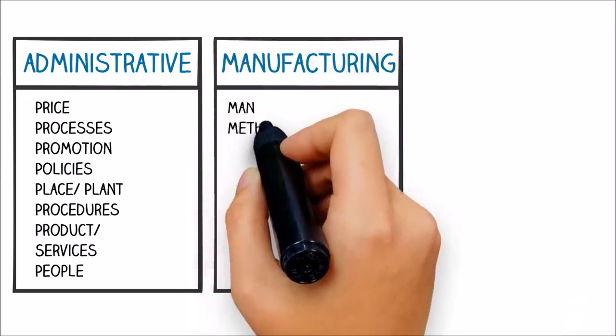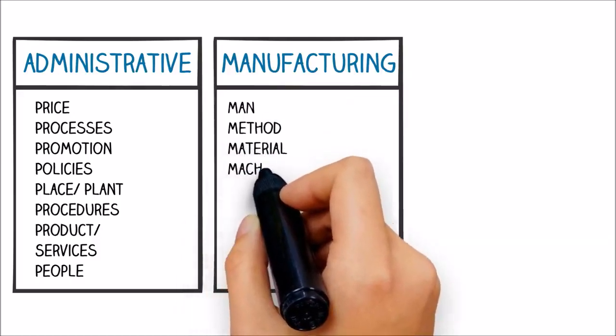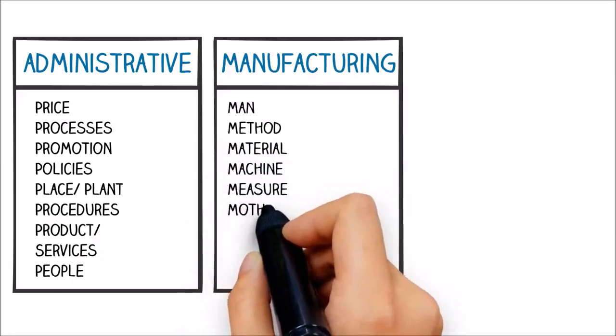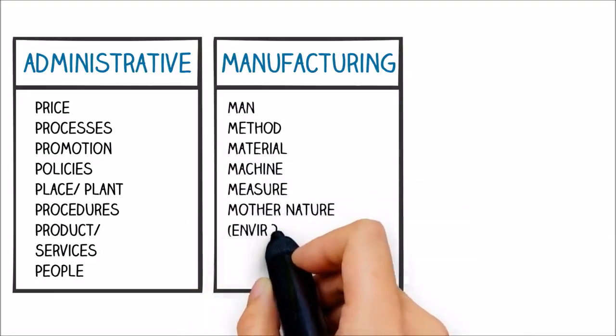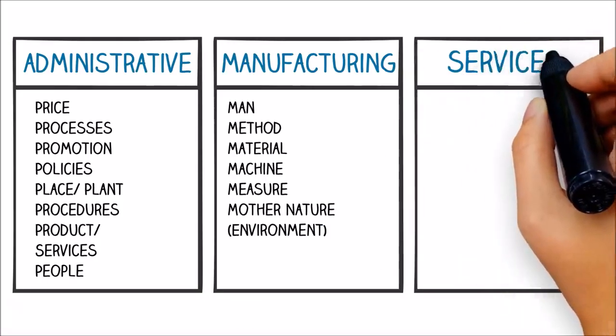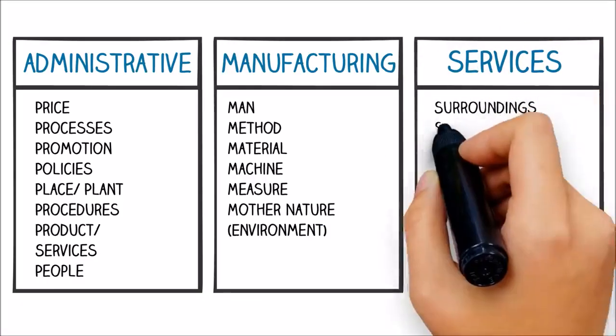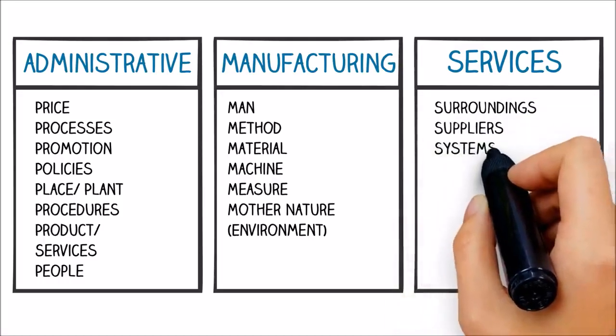In Manufacturing, there's Man, Method, Material, Machine, Measure, and Mother Nature, or the Environment. And in Services, you have Surroundings, Suppliers, Systems, and Skills.